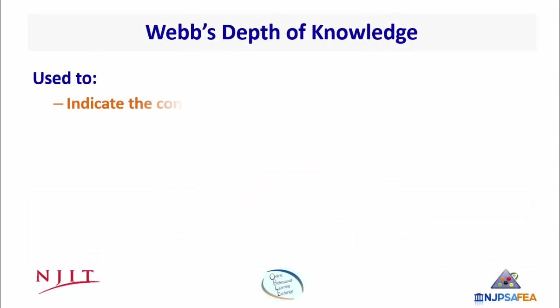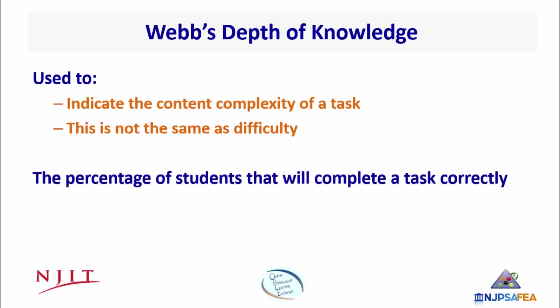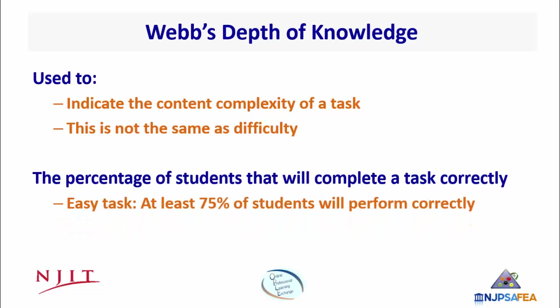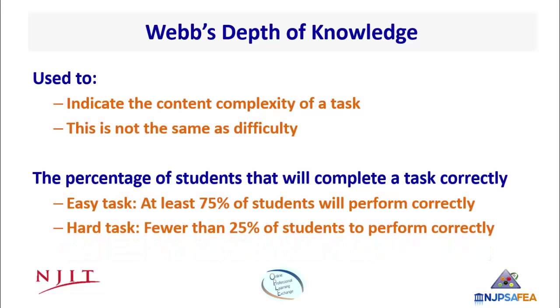The DOK level indicates the content complexity of a task. This is not the same as difficulty. Difficulty generally refers to the percentage of students that will complete a task correctly. An easy task, for example, is one which we expect at least 75% of students to perform correctly. A hard task, on the other hand, is one we expect fewer than 25% of students to perform correctly.